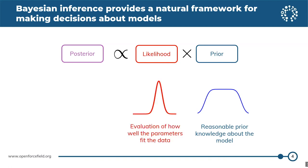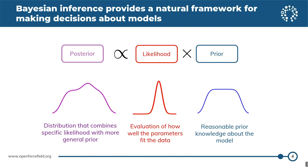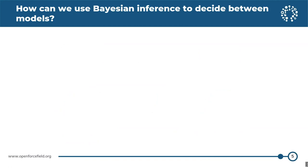The likelihood distribution describes how well your model and set of parameters reproduce a specific data set. You have some new data set in terms of physical properties, and you evaluate your model based on its performance relative to that. When you combine these, you get the posterior distribution, which combines that specific likelihood with the more general prior knowledge you already had. So how do we use this to decide between models?